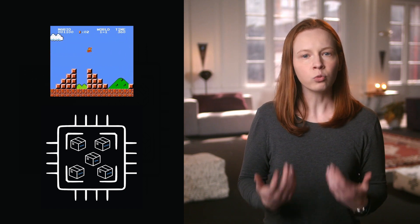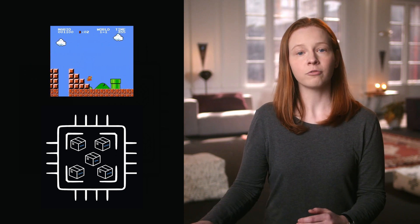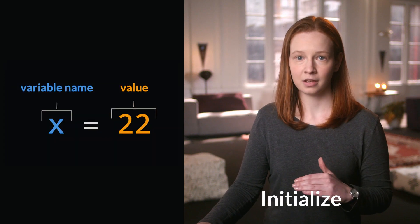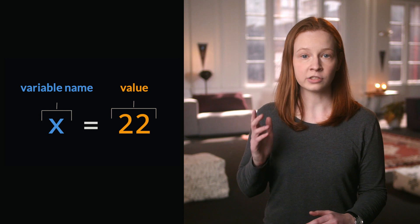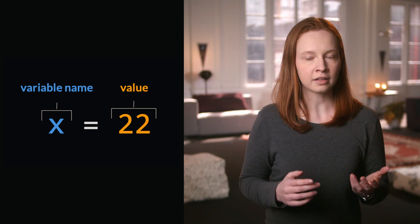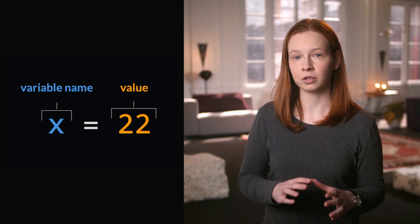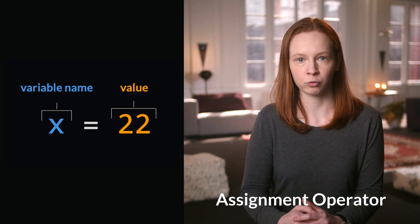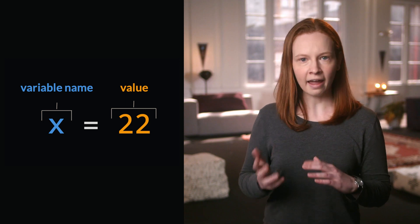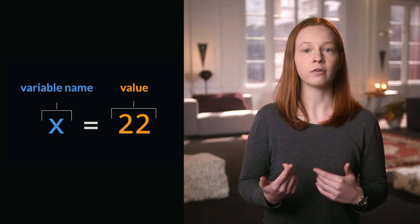So how can we create our own variables in Python? A variable is created when you initialize it using this syntax. Python assigns the value 22 on the right side to the variable name x on the left. The equal symbol in Python is called the assignment operator. So we can read this line of code as the variable x is assigned the value of 22.